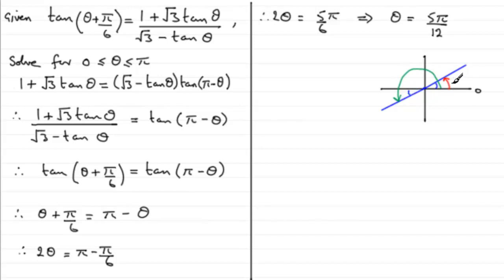And the larger of the two angles is the theta plus pi upon 6. That is the green one, it's theta plus pi upon 6. The red one happens to be pi minus theta.